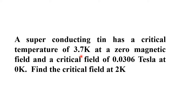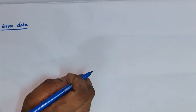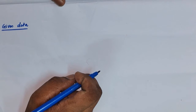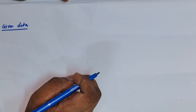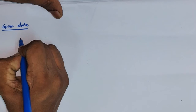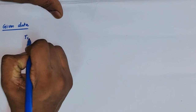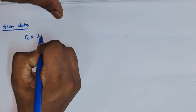Here the question is: a superconducting tin has a critical temperature of 3.7 kelvin at zero magnetic field and a critical field of 0.0306 tesla at 0 kelvin. Find the critical field at 2 kelvin. The critical temperature of the superconducting tin is given as 3.7 kelvin.